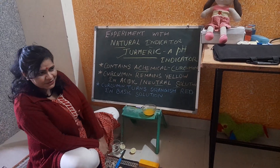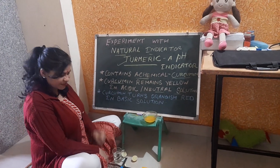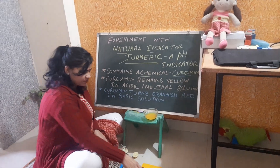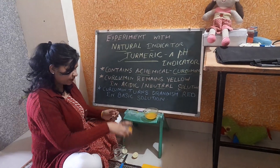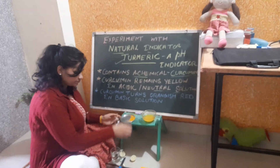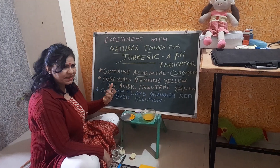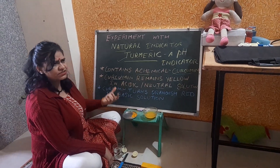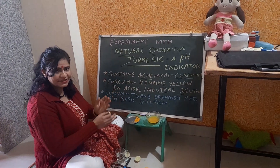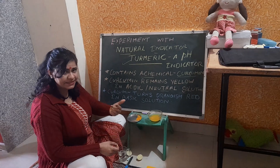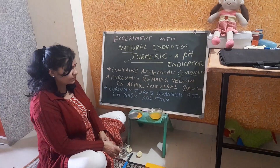Hello friends, let's do some fun with science today. We have taken indicators as our topic today. What is an indicator? The chemical substance that can change the color of acidic and basic solution is called an indicator.